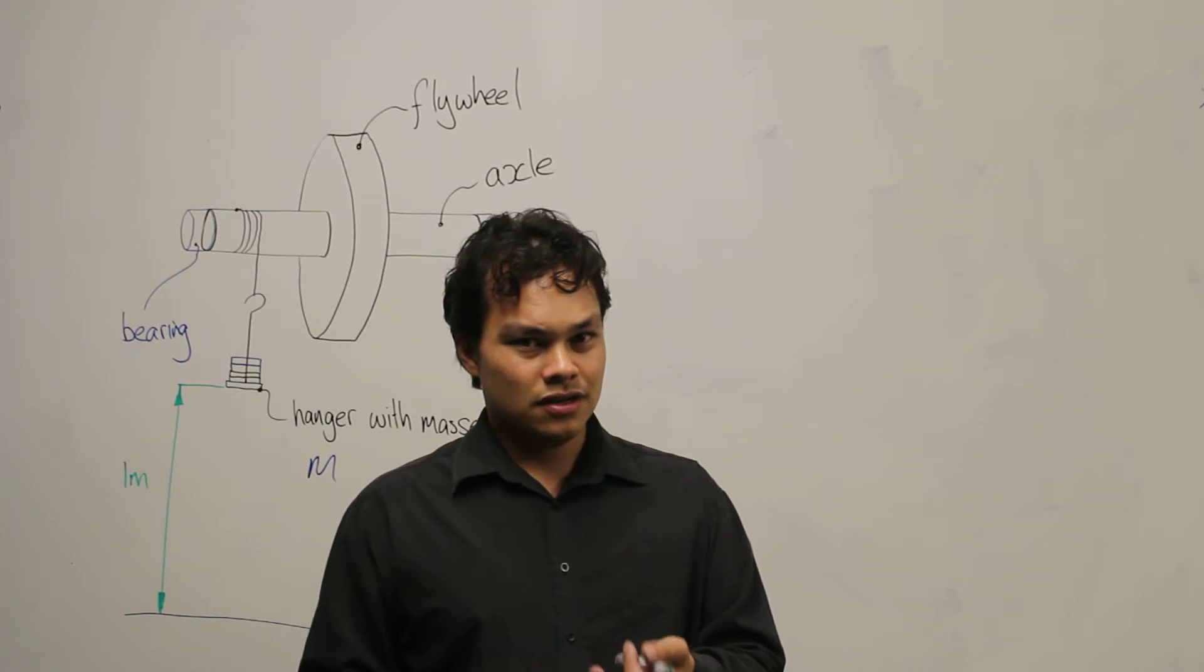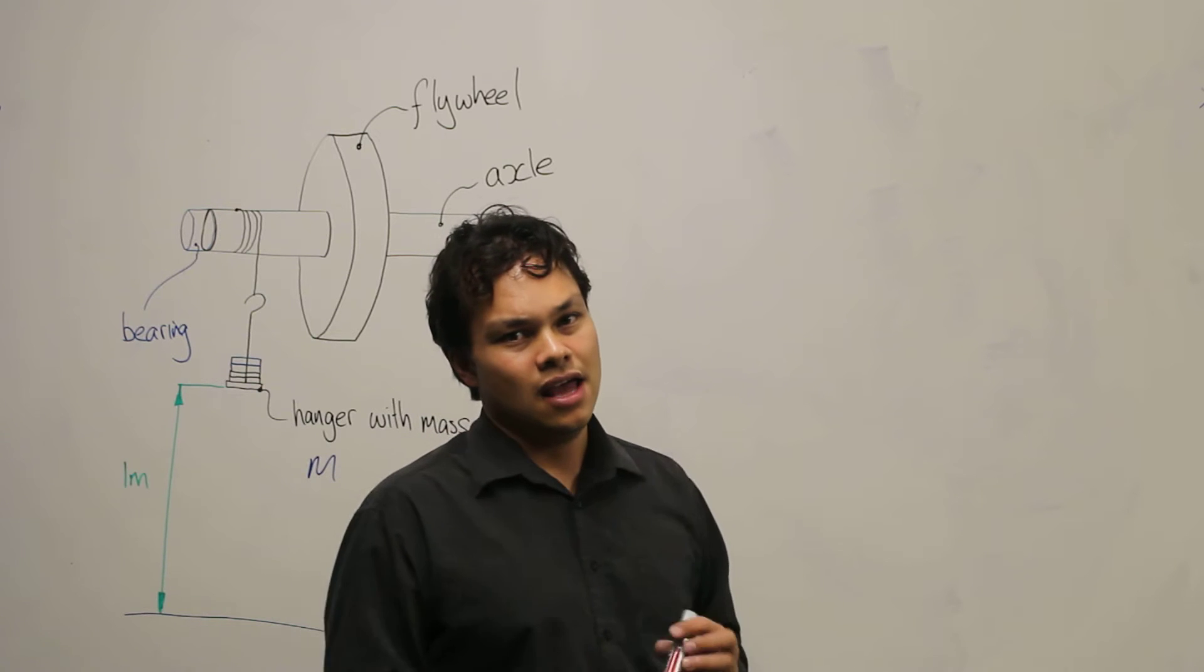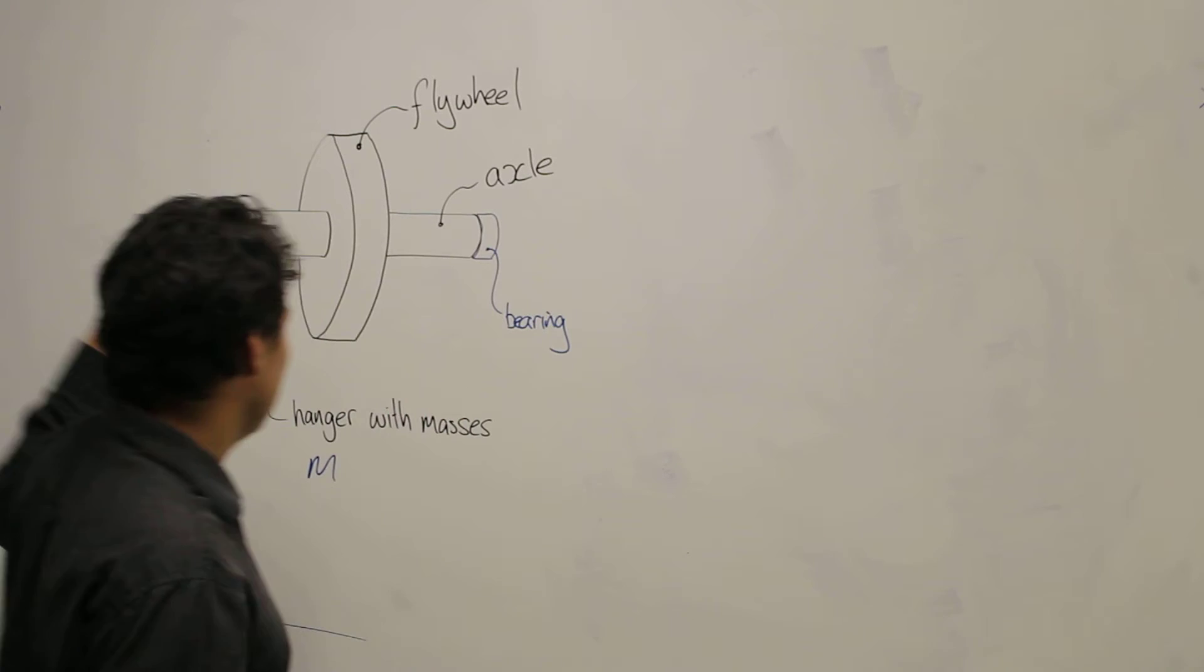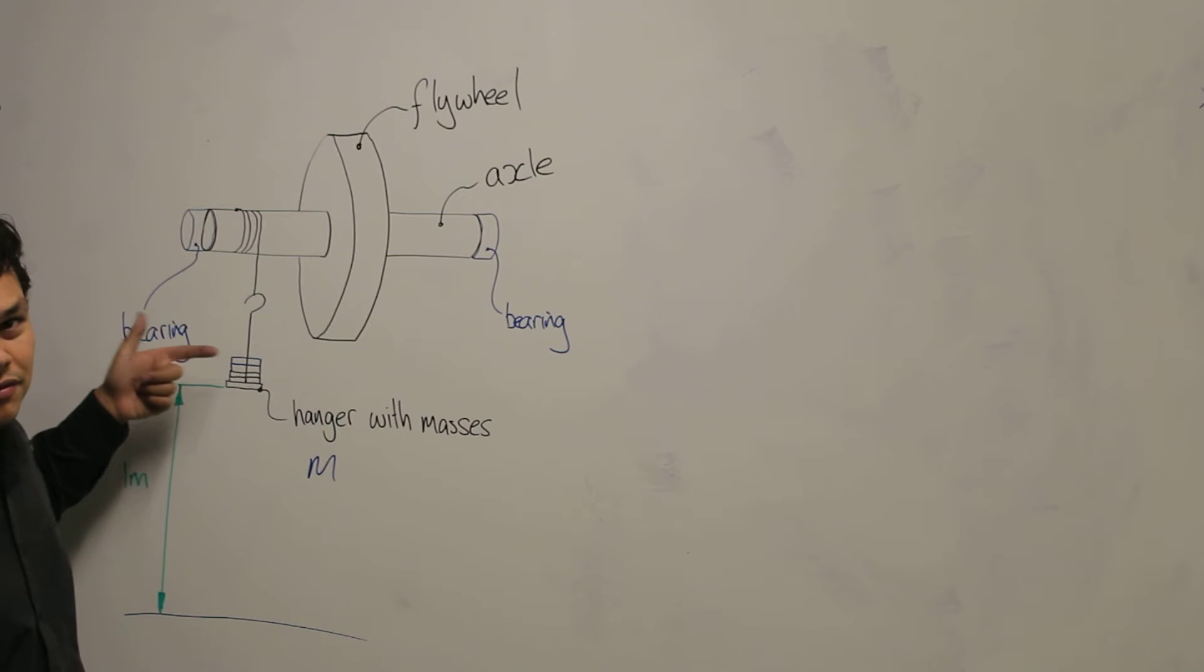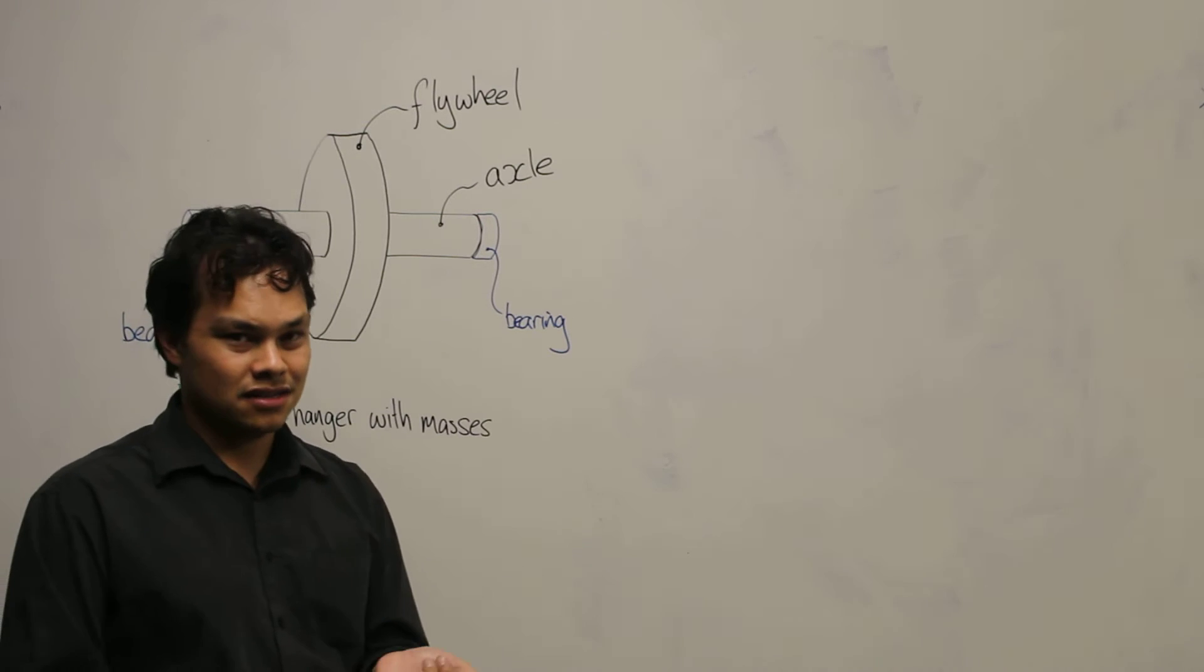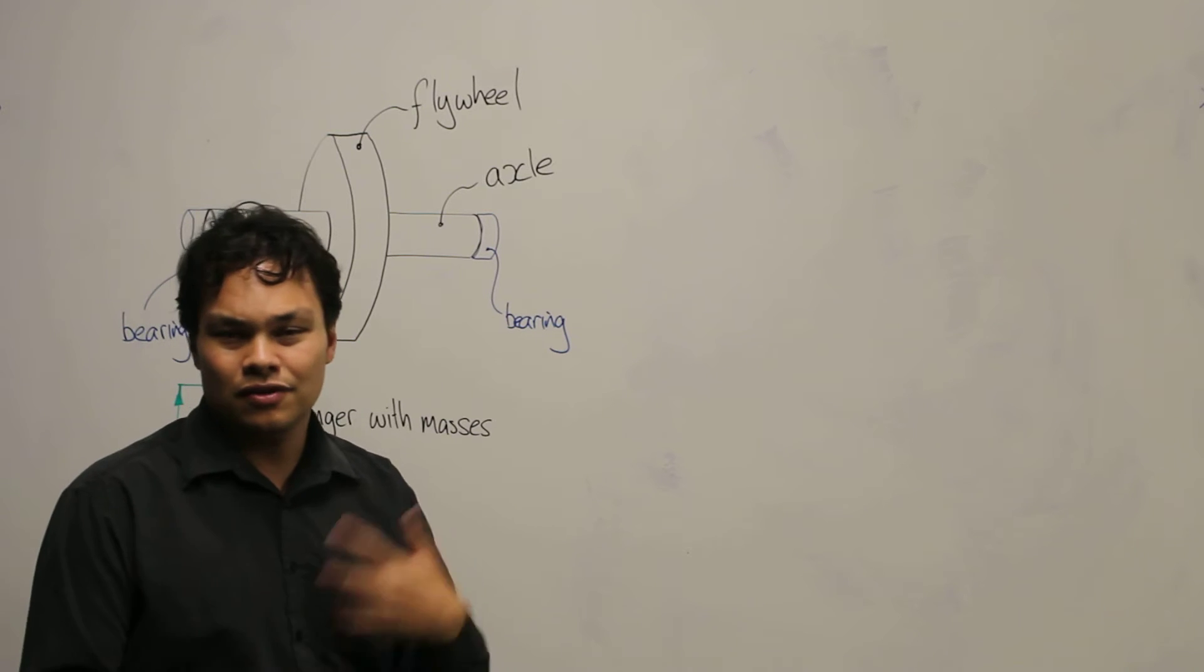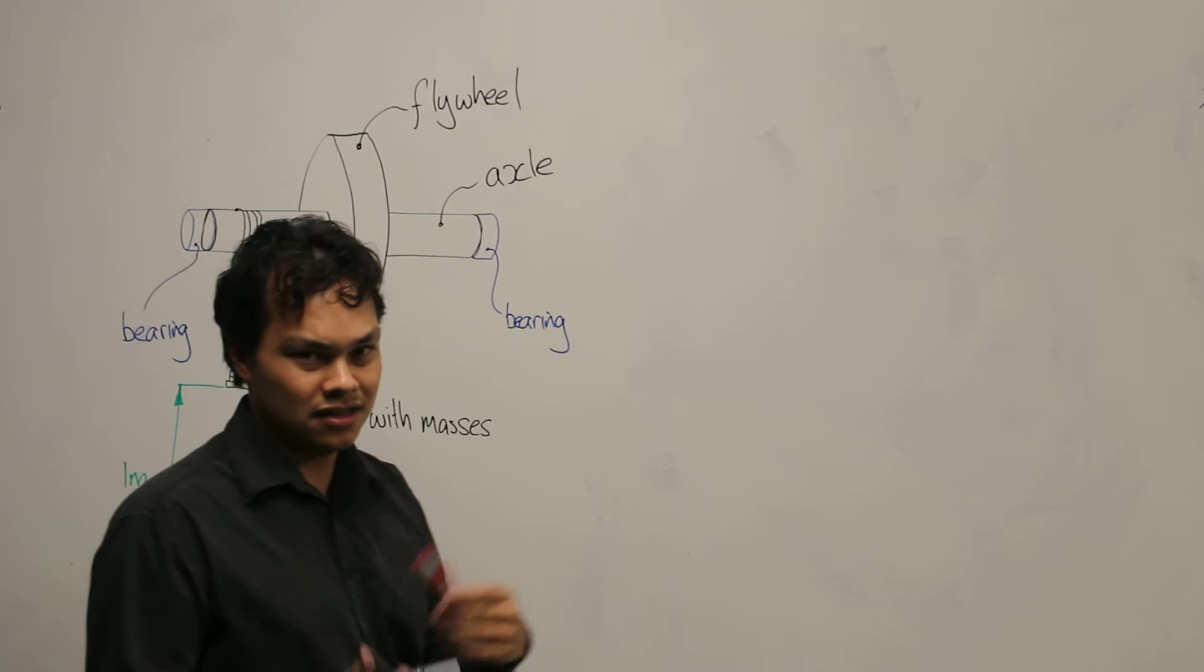Now what we do is we can look at the motion of the mass and we see that the mass has moved the distance of one meter and we've measured the time taken for that motion to happen. So we can write down a few things that we know about the situation.